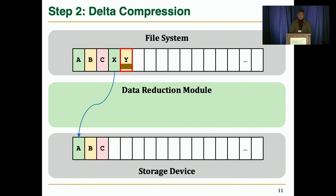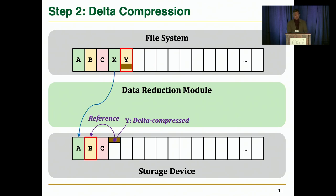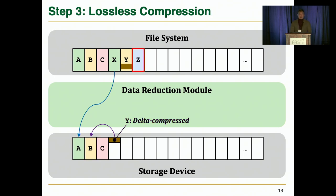If there is no identical data, the data reduction module tries delta compression. Here, block Y is slightly different from block B. So if the data reduction module can find this out, it performs delta compression and stores the compressed data. The data reduction module also needs to keep the mapping information between blocks Y and B, so that it can decompress the delta-compressed data for future reads to block Y. Finally, if there is neither an identical block nor a similar block, the data reduction module just performs lossless compression.